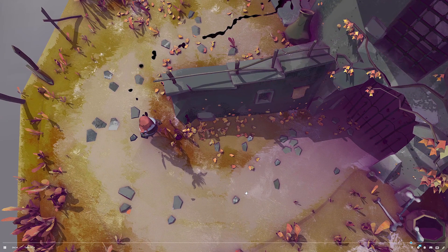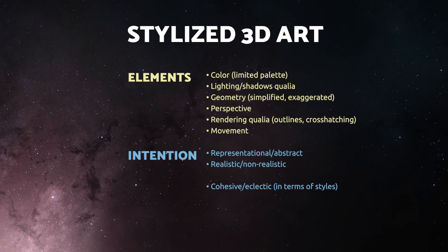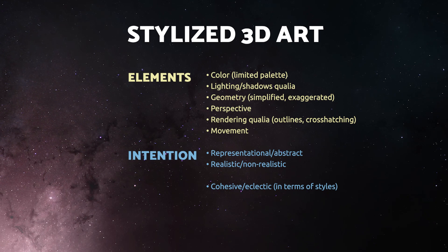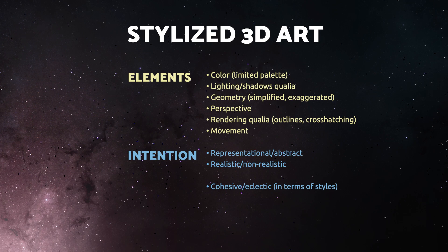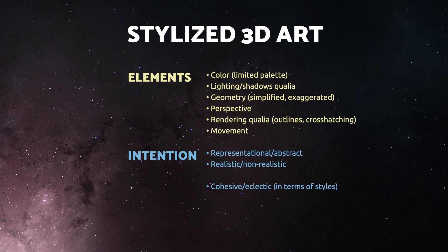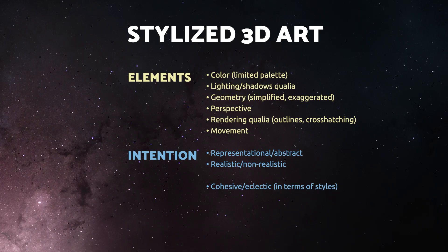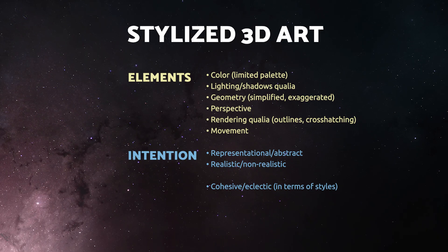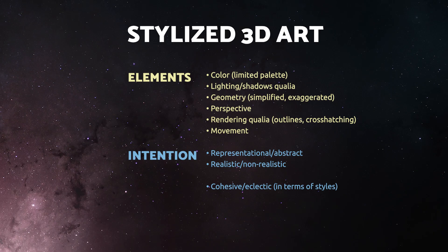Our artistic intent may involve breaking the rules in some crazy way — like what if this girl is casting a demon shadow? In the realm of all possible creative decisions, that is totally viable. What we actually do when we create NPR art is design the rules for color, for lighting and shadow qualities, for geometry, for perspective, for rendering, for movement — for practically every aspect of the computer graphics pipeline. We take control over these things and define precisely how they should function. You may want to imbue some of these elements with abstract or representational qualities, make them realistic or not, cohesive or eclectic — it's totally up to you.